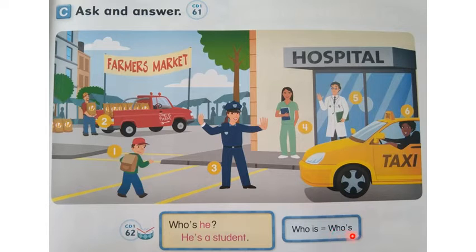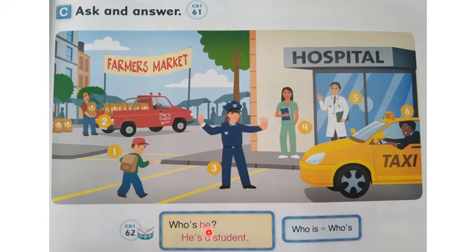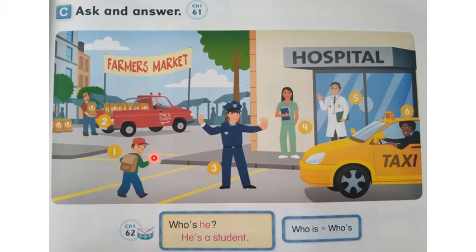Who's. You say it. Who's. One more time. Good. Who's he? We can say he's a student. He's a student. Who's he? He's a student. Good.